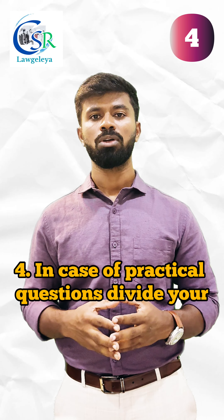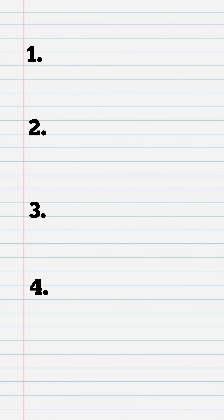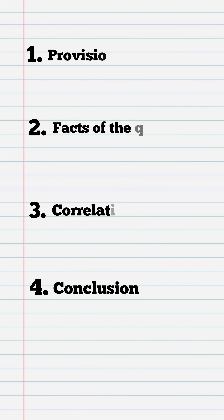Tip 4: In case of practical questions, divide your answers into 4 paragraphs: 1. Write the Provisions of the Act. 2. Write the Facts of the Question in Brief. 3. Write the Correlation between the Provisions of the Act and the Facts Given. 4. Write the Conclusion.